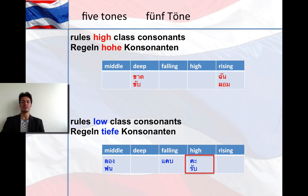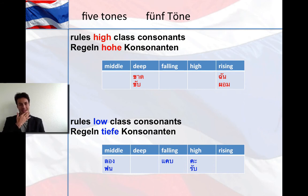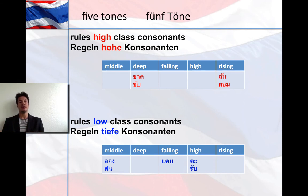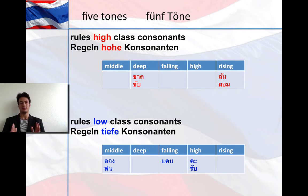K und Rapp. It may sound a little complicated at the beginning, but it is actually pretty easy. The absolute must is that you can distinguish between high class, low class, and middle class consonants on one hand, and between living and dead syllables on the other. As soon as you're good with that, you're good to go.